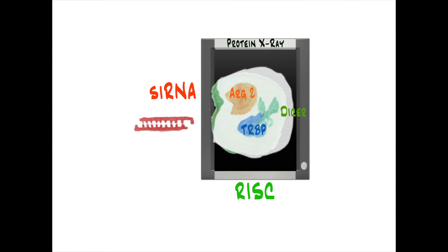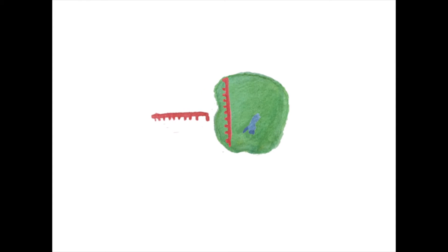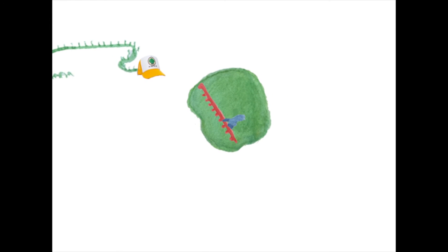This newly formed siRNA is picked up by the RNA-induced silencing complex, RISC. RISC peels the antisense strand off the siRNA and keeps this antisense strand. This strand is now called the guide strand.